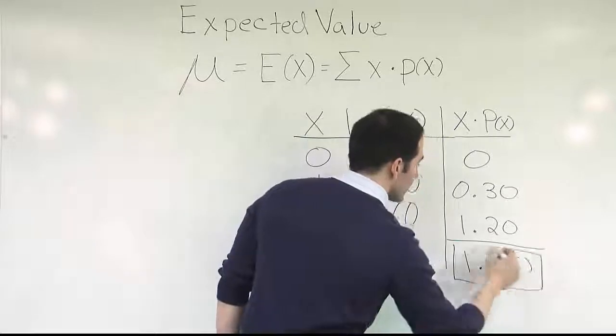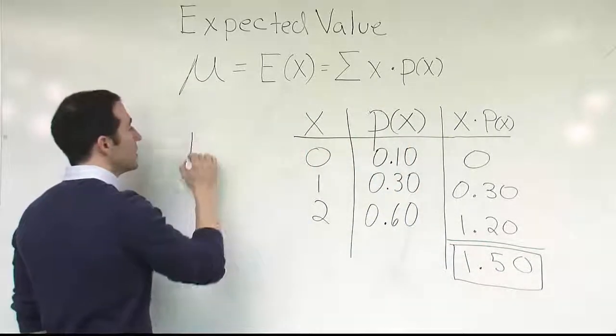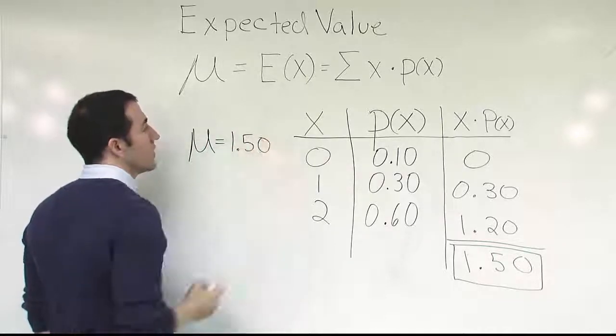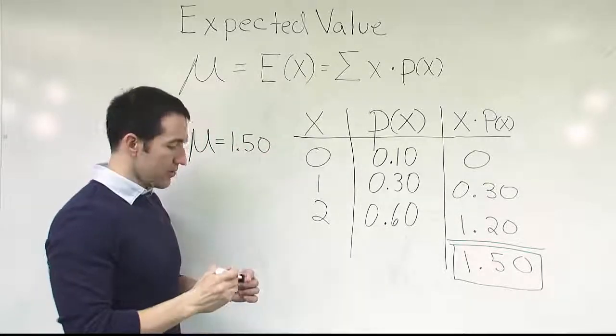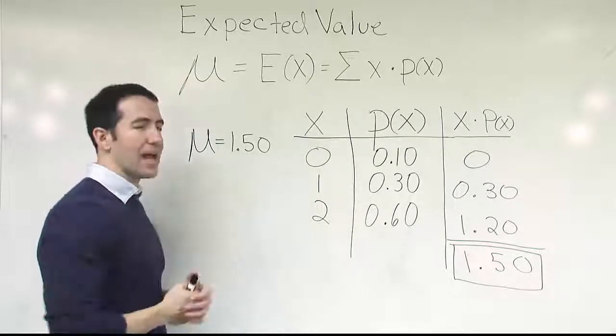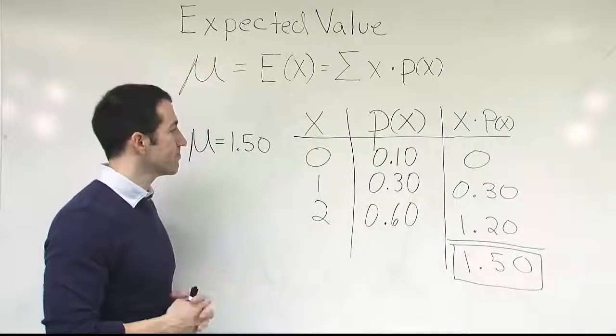So the mean for this particular probability distribution, in other words, the average value is going to be 1.50. So if this was some kind of event or experiment, if you ran it over and over again, the average outcome you would see is 1.50 basically. And that's it.